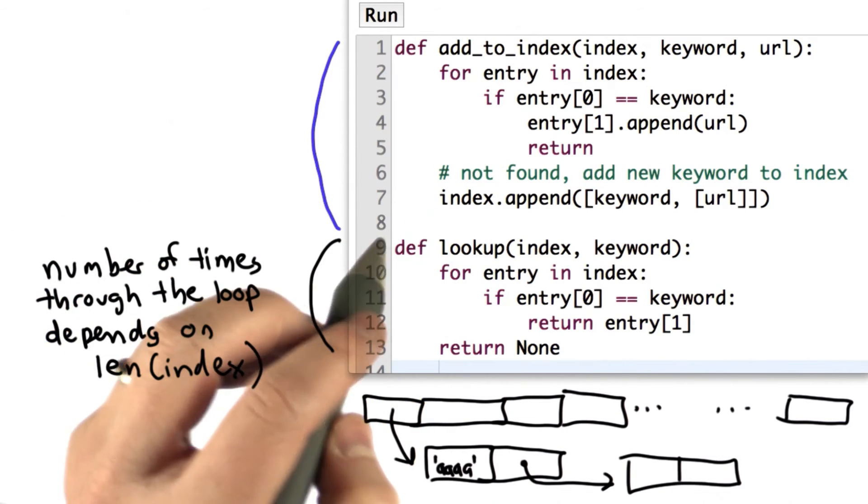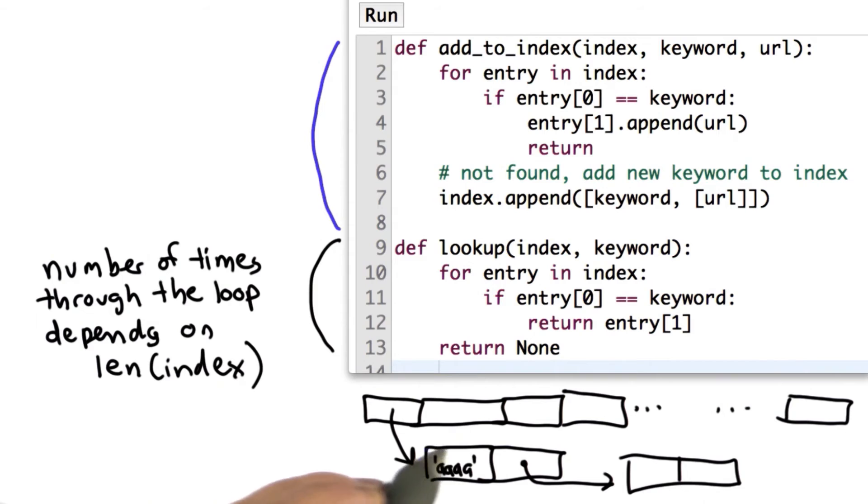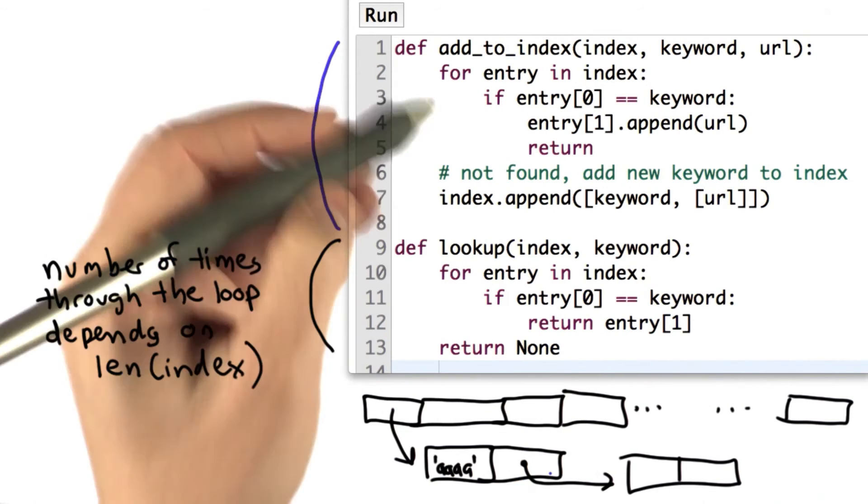So this means that the first entry we add will always be at the beginning. That's why the A with eight A's is first. And the last one that we add will be at the end.